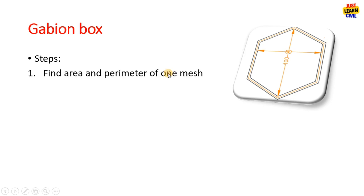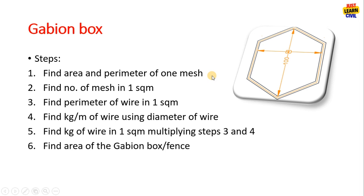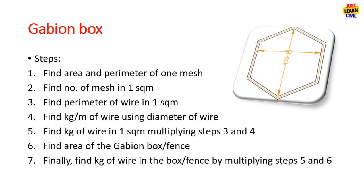Steps to calculate are: find the area and perimeter of one mesh in square meters, then find the number of mesh in one square meter and the length in one square meter. Once you know the length, find the kg per meter of the wire using the diameter of the wire and multiply the perimeter and kg per meter. You will get the weight in kg of one square meter. Now you have the area of the box and you can find the kg of wire used in the entire box. We will see this step by step.